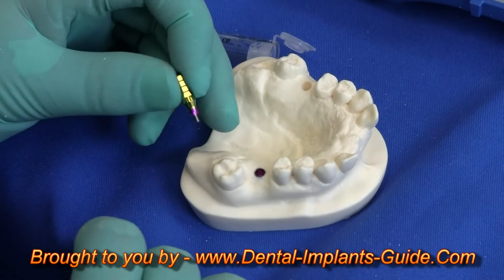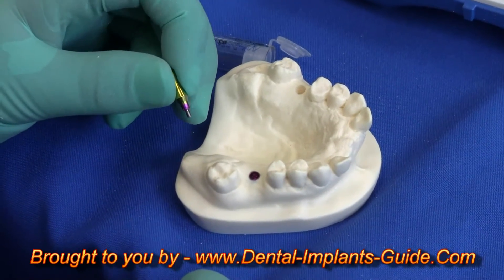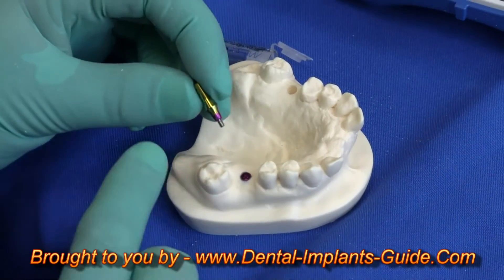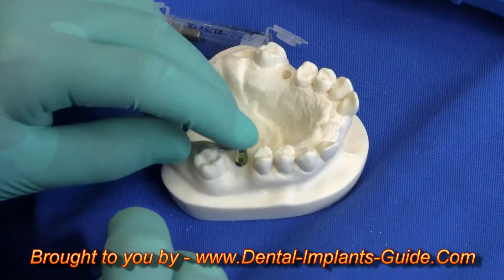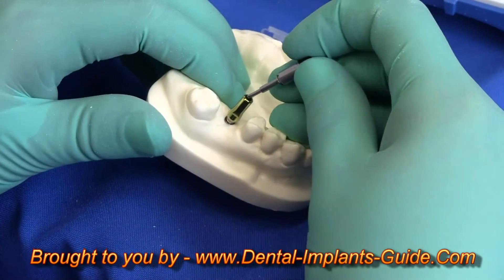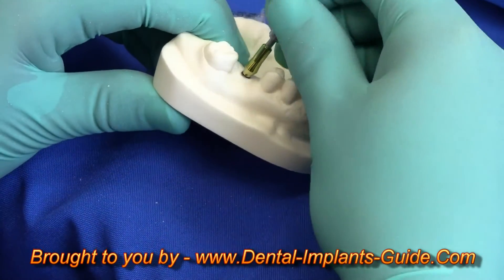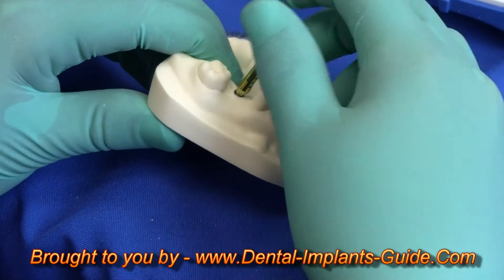The visible part of the abutment is gold-colored to help make a more natural-looking crown. You can see where the base of this abutment will be smaller than the diameter of the implant itself, which is platform switching.